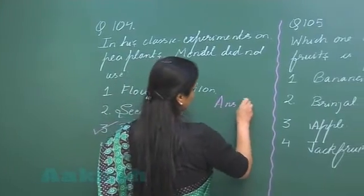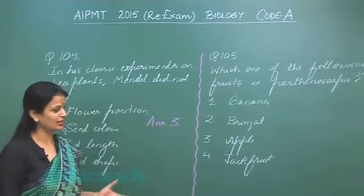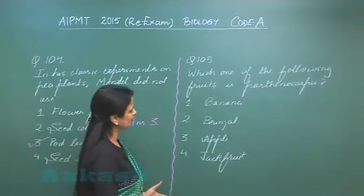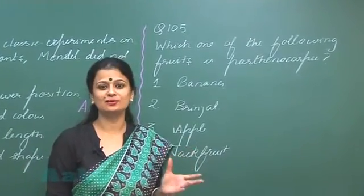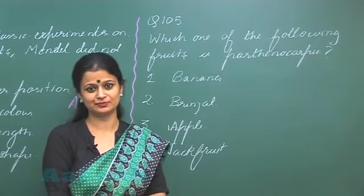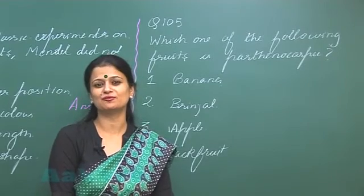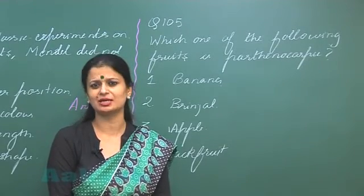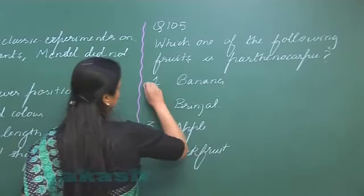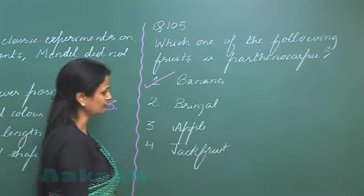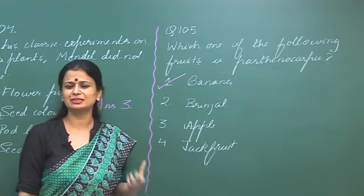So for question 104, the right option is option number 3. Now coming to question number 105: which of the following is a parthenocarpic fruit? A parthenocarpic fruit is one which is formed without fertilization, and most fruits formed without fertilization are seedless. A natural parthenocarpic fruit is banana.